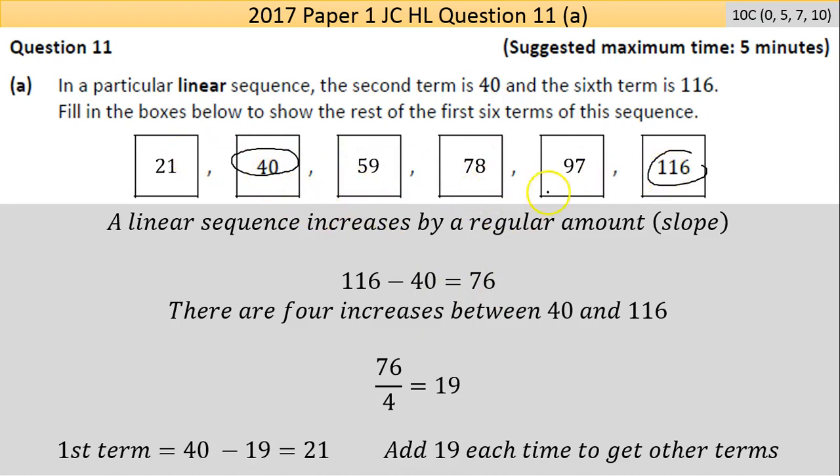That's four equal jumps to get that 76 covered. So divide 76 by 4, it's 19. So the difference between each one is 19.